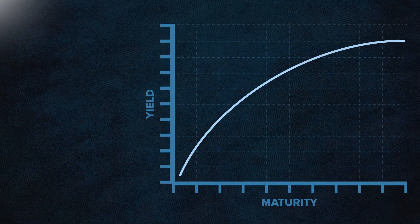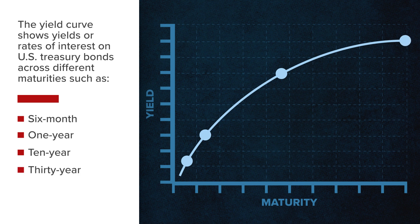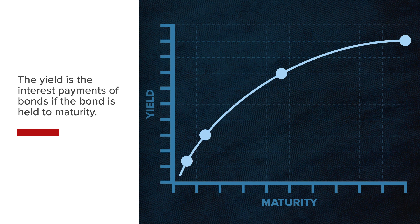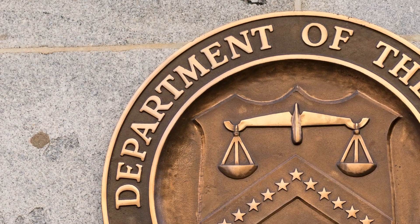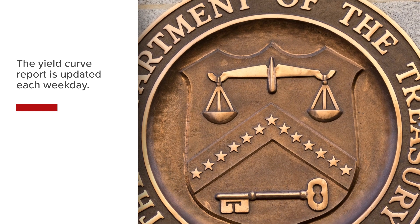The yield curve shows yields or rates of interest on U.S. Treasury bonds across different maturities such as the 6-month, 1-year, 10-year, and 30-year maturities. The yield is the annualized return received through interest payments that a new buyer of bonds can expect upon purchasing, if the bond is held to maturity. The U.S. Treasury Department bases the yield curve report on bond yields in the open market and it is updated each weekday.